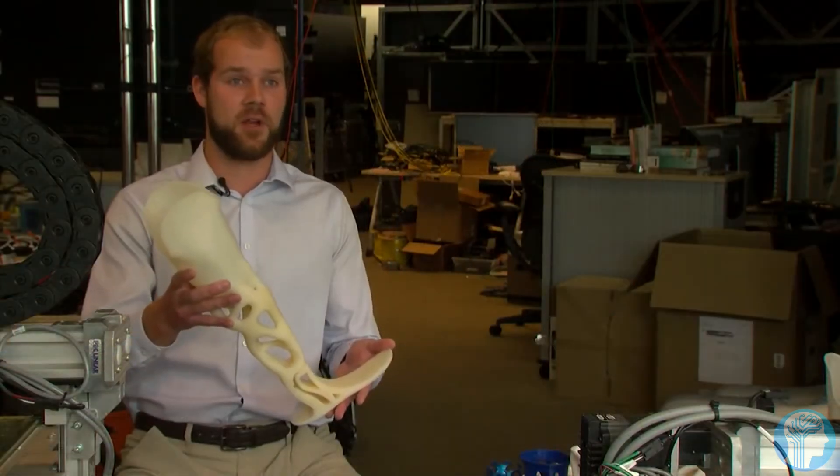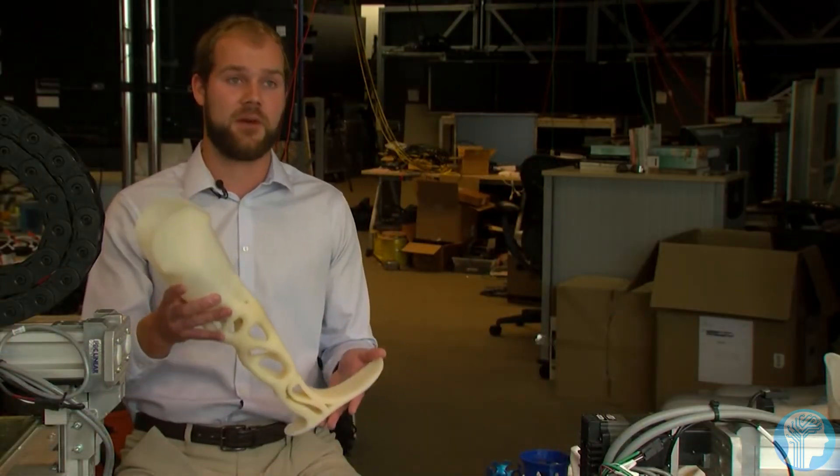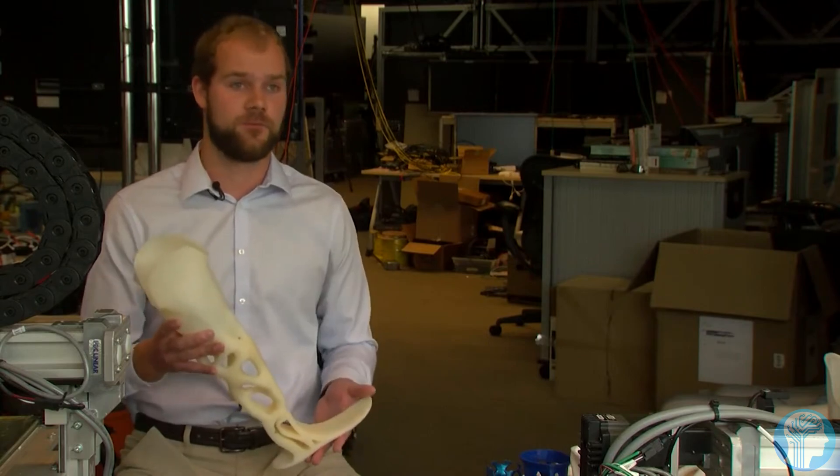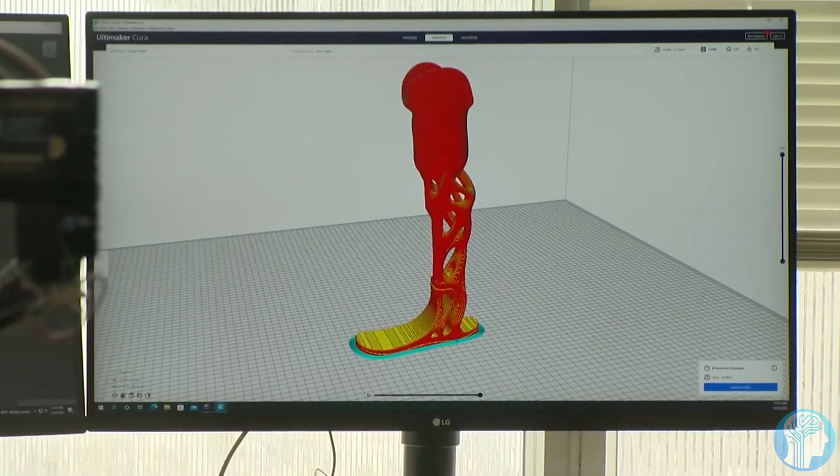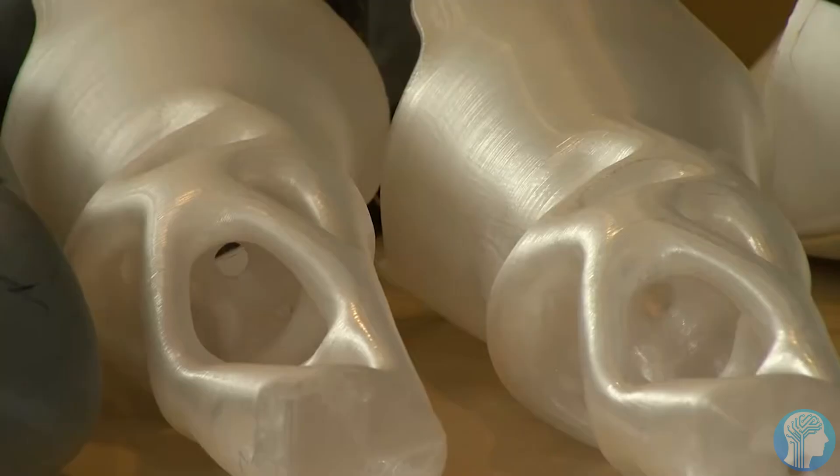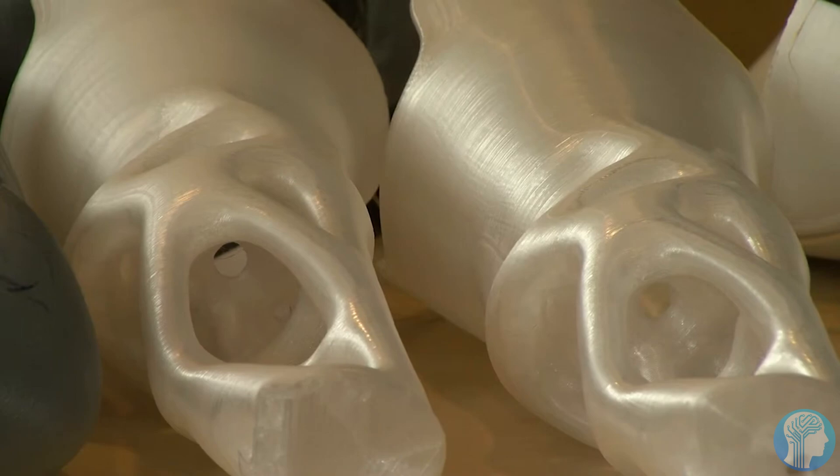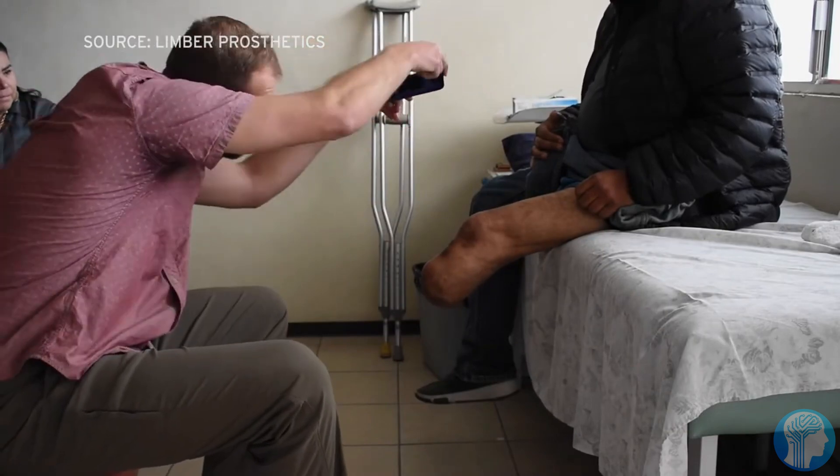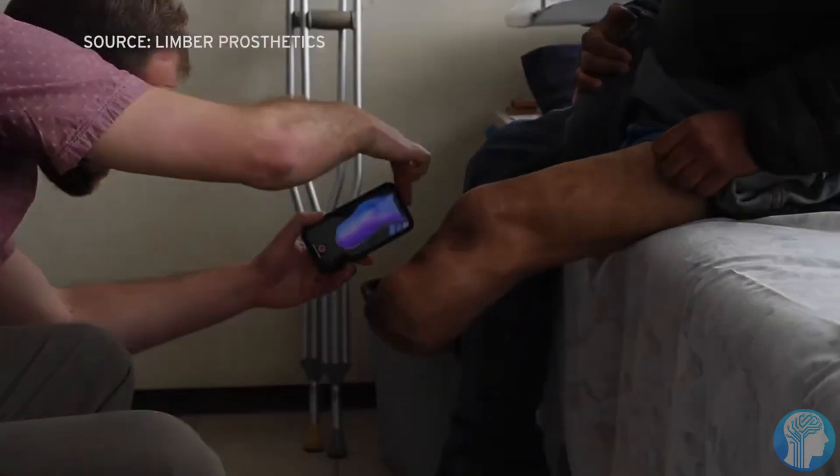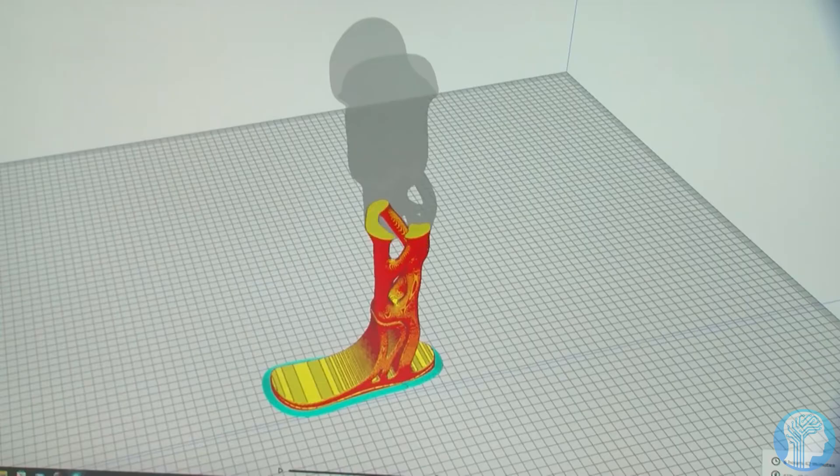Moreover, the system's ability to print diverse materials means that these prosthetics can be tailored to individual needs. From lightweight and flexible materials for a more comfortable everyday experience to robust structures for heavy-duty tasks, the possibilities are boundless. The integration of biologically active molecules could even promote tissue integration, reducing the gap between the artificial limb and the user's body.